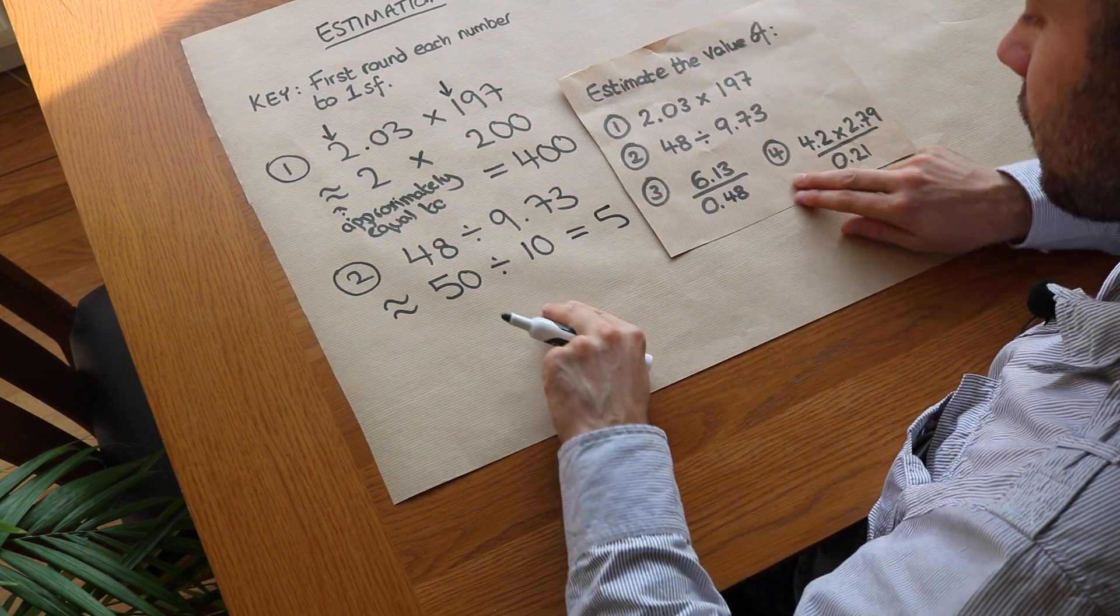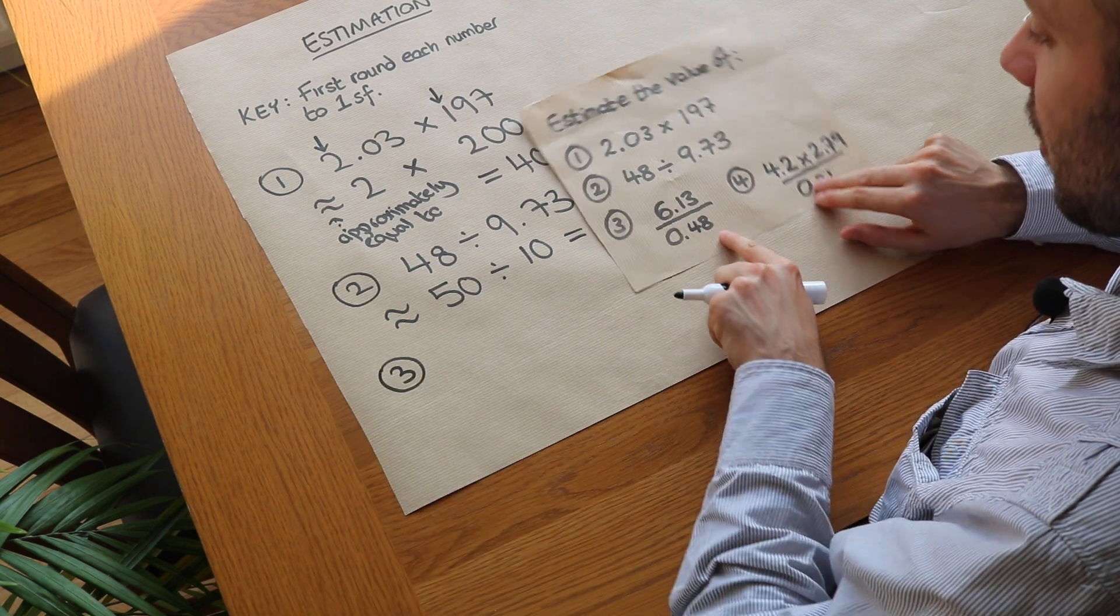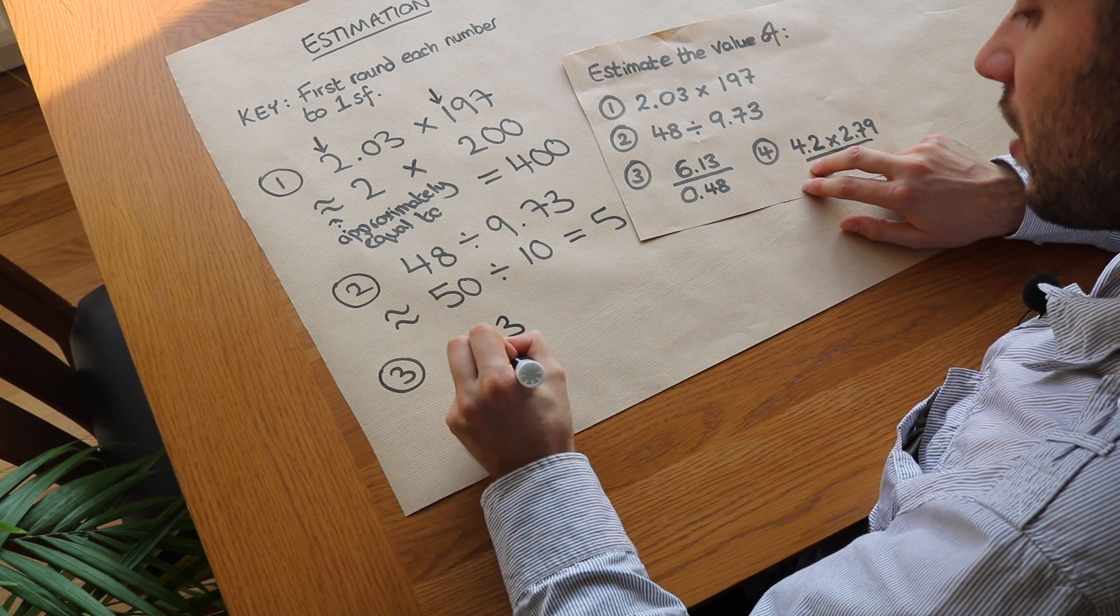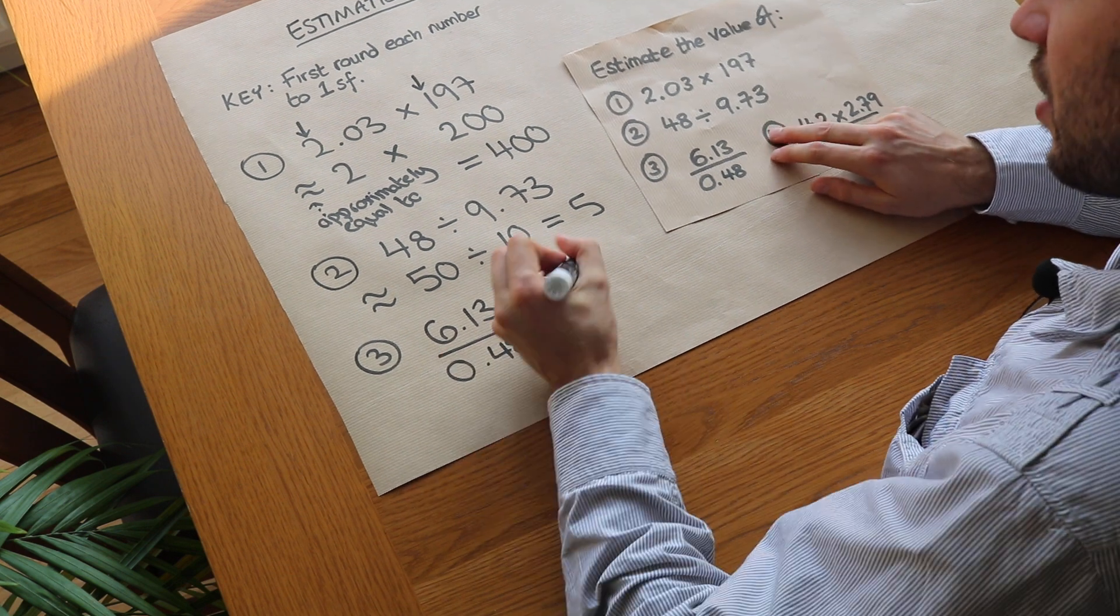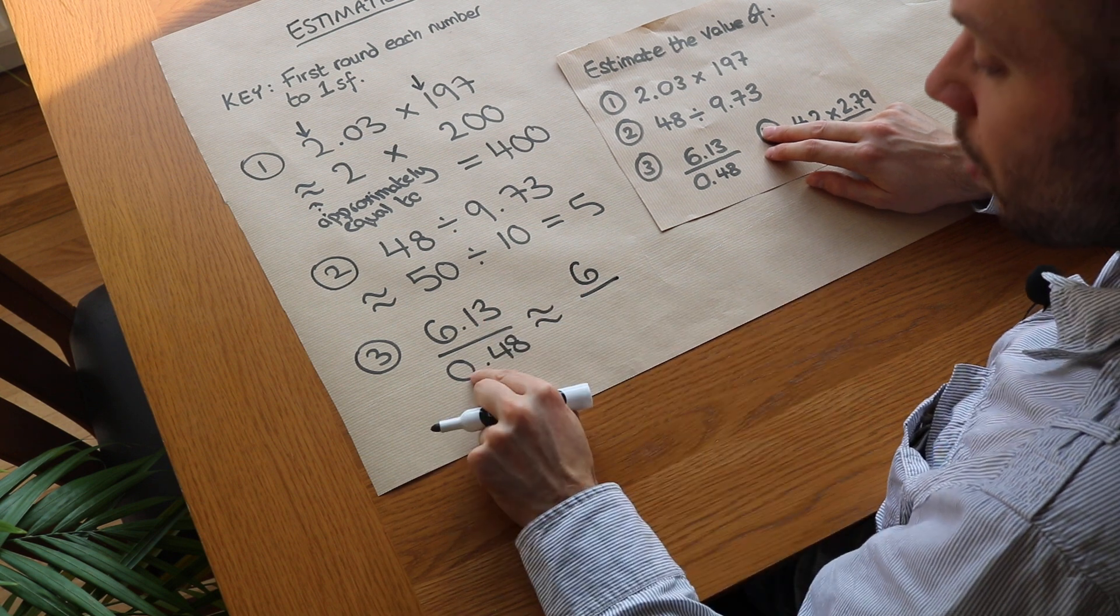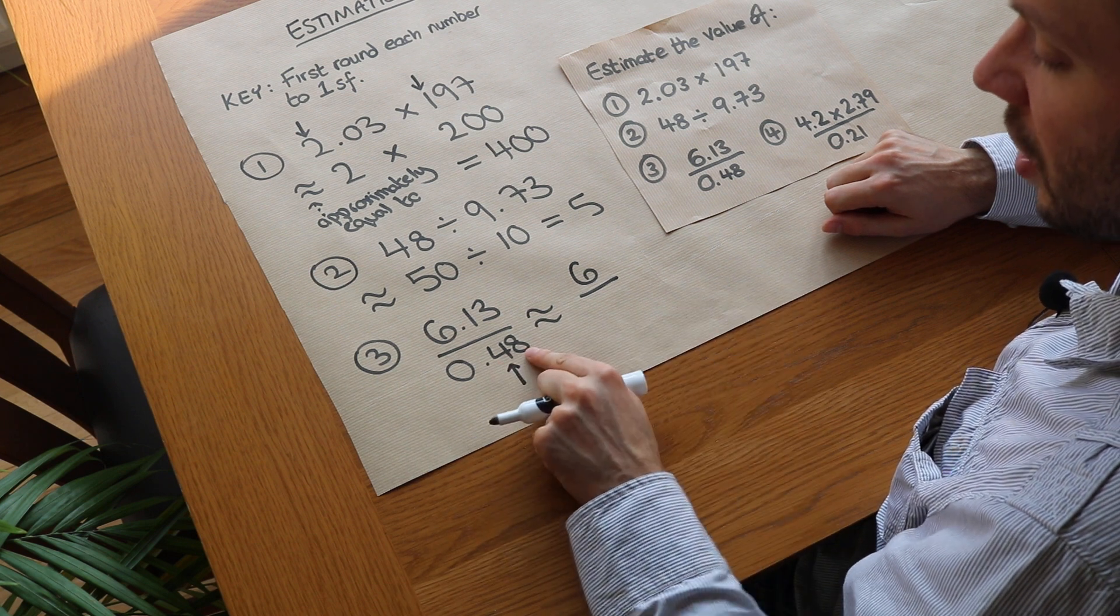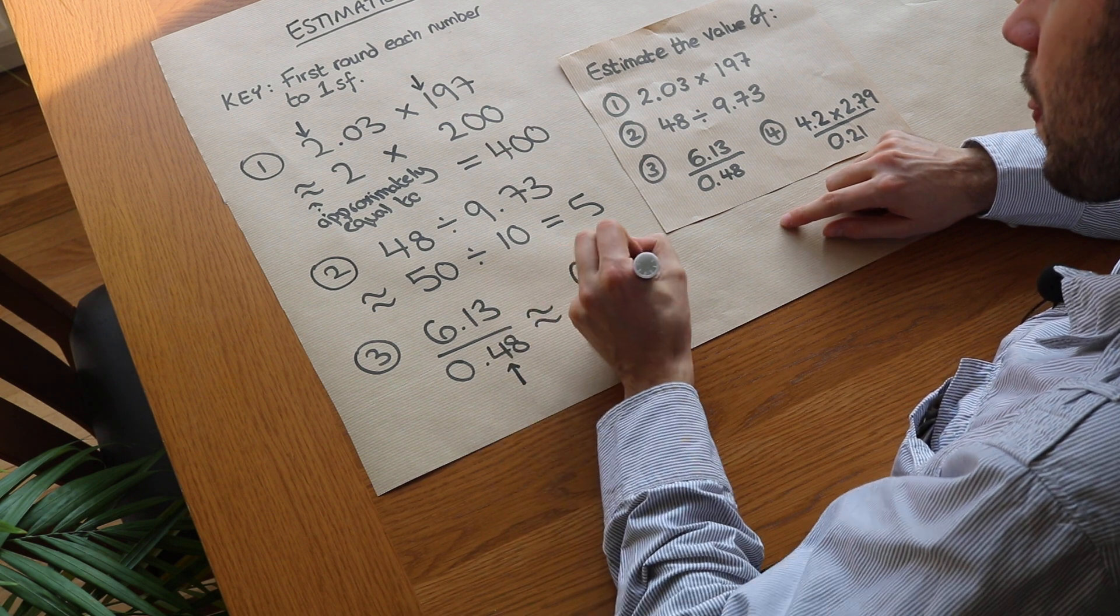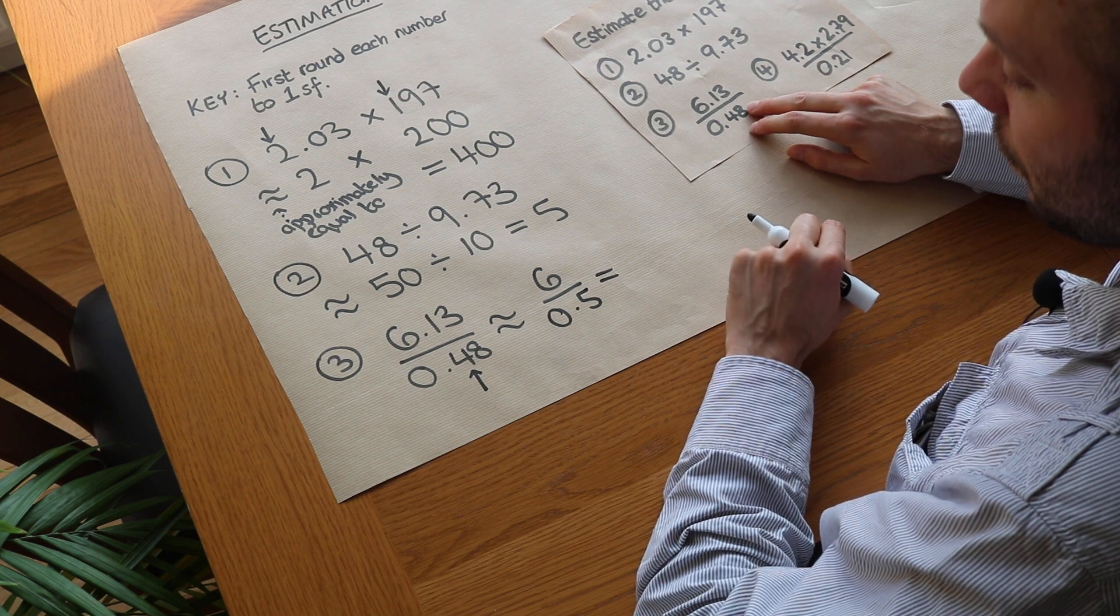Now where it gets slightly harder is where we're dividing by zero point something. If we have 6.13 divided by 0.48, what's this approximately equal to? Well 6.13 is just 6 to one significant figure. What about this one? The first non-zero digit is the 4, and as always we check the digit after. Is it greater or equal to 5? Yes it is, so that 4 goes up to 5, so we have 0.5.